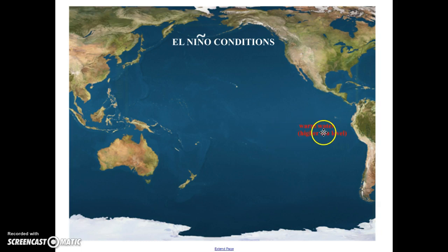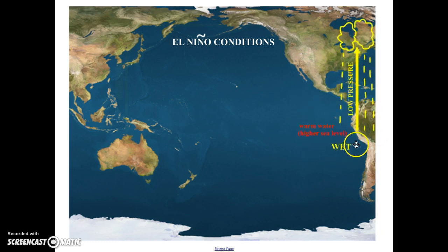When the warm water travels east, it's going to bring the warm air with it. So now the air over the eastern Pacific is warmer and so it's low pressure. The air is going to rise, cool to the dew point, and condensation will happen, making wet, moist conditions over the western part of South America. Remember, it is normally an arid region — during El Nino, it becomes wet.